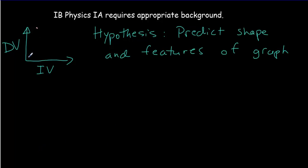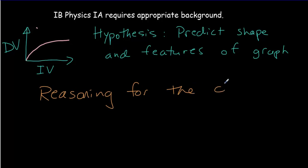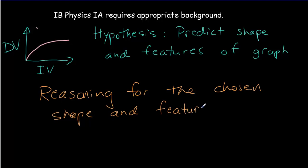Maybe you predict that the dependent variable is going to increase rapidly at first, but then as the independent variable gets bigger, it's not going to increase so rapidly. So you've got a prediction graph there. What's usually difficult for students to come up with is reasoning for the chosen shape and features, and that's really what this video is going to be about — teaching you some approaches to help you come up with good reasoning for your prediction graph.